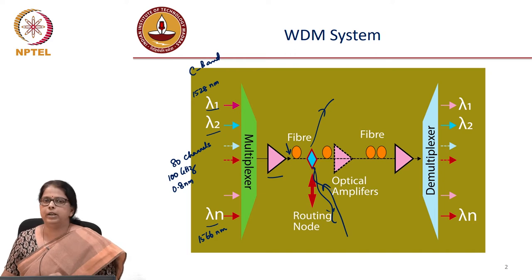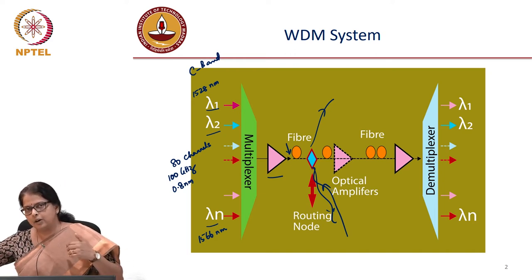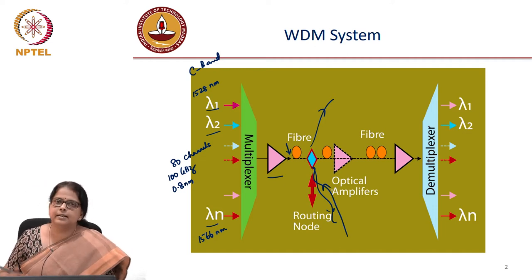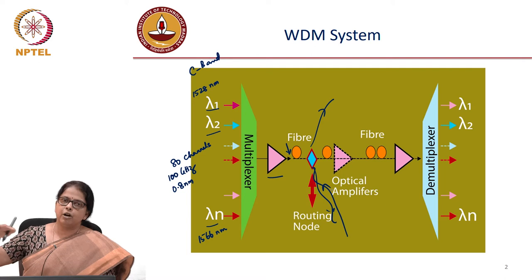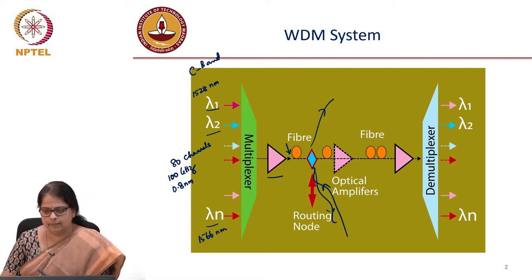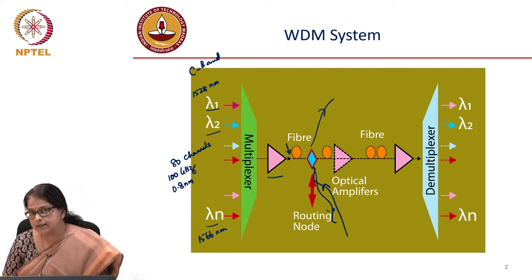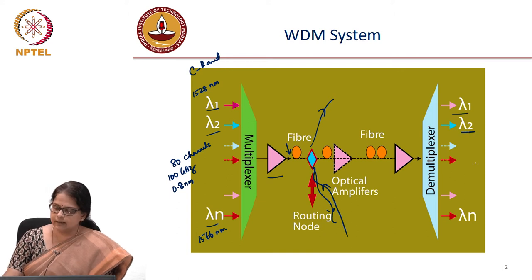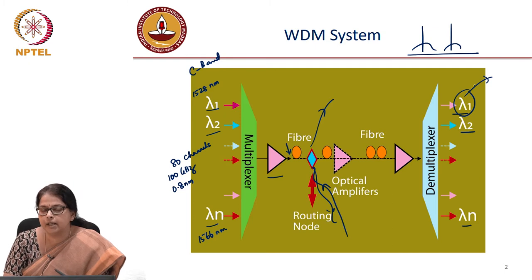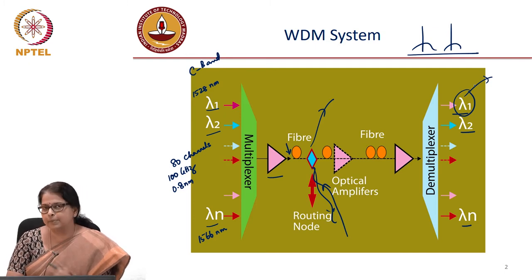There could be routing nodes, and the link can continue for a long distance with cascaded EDFAs. At the receiver, wherever you want to drop or add channels, you need a device called a wavelength division demultiplexer. The wavelength division demultiplexer should exactly separate out all these colors, because in each color you have modulated data. You may be interested in dropping specific channels.